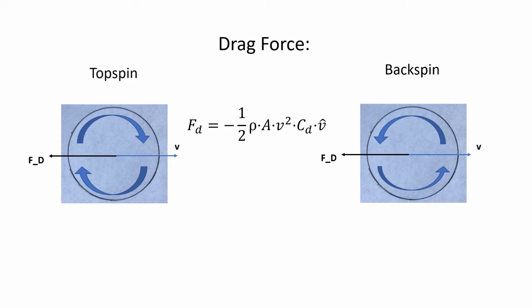This force is generated by the difference in velocity between our ball and the surrounding air, and therefore it is in the direction opposite to the direction of the ball, and this explains why we have the minus sign in our equation.